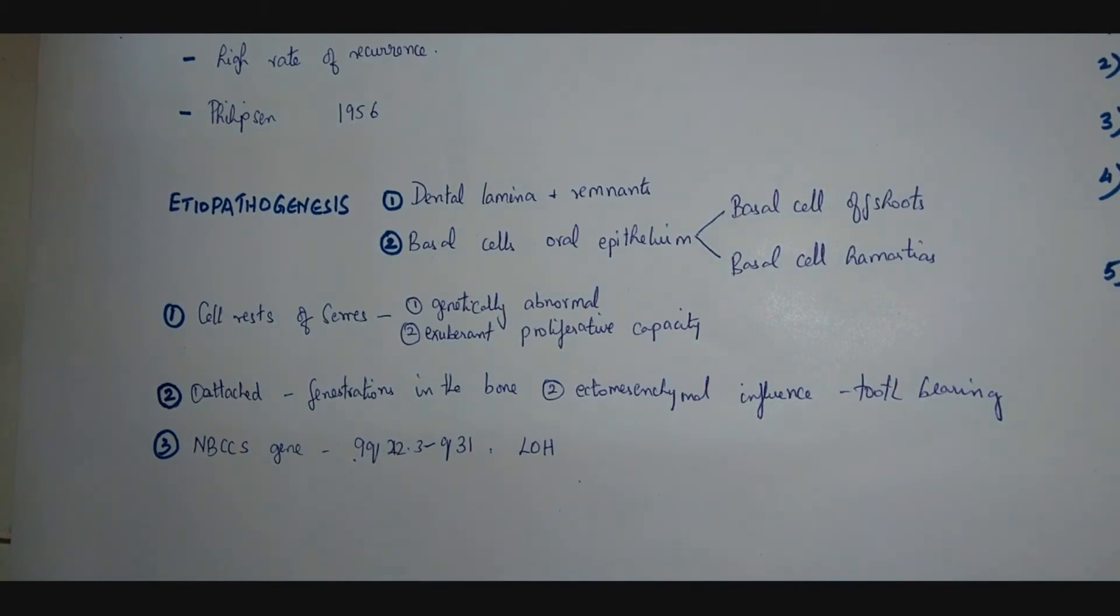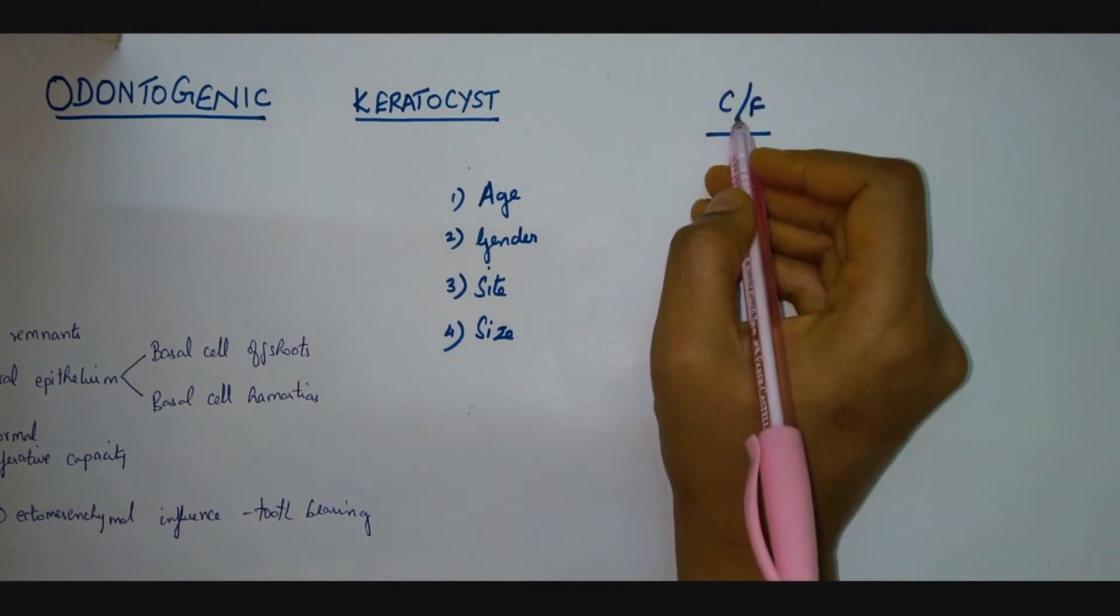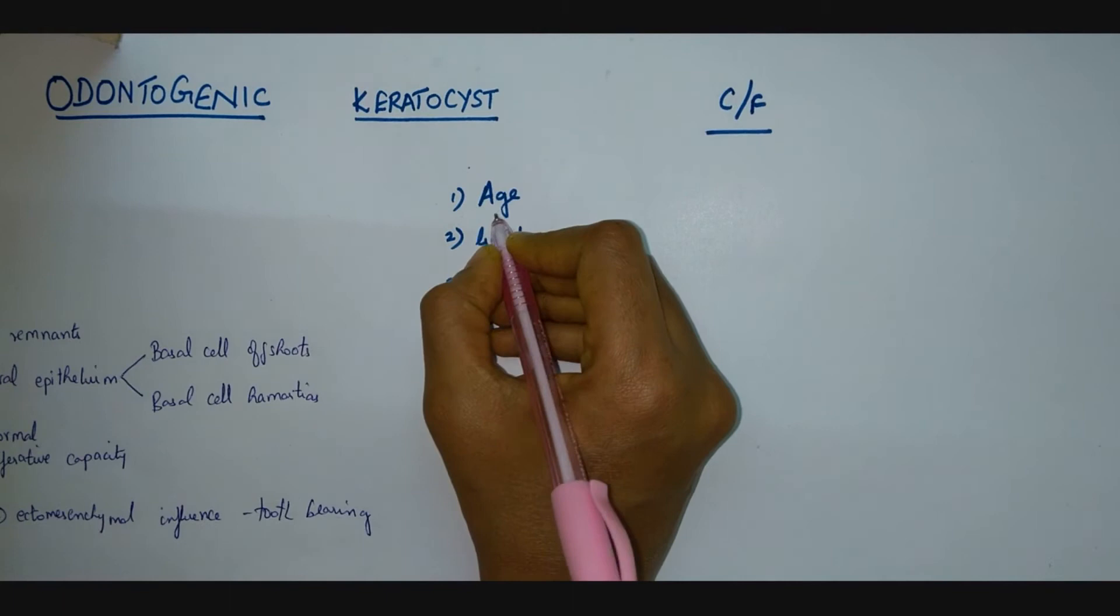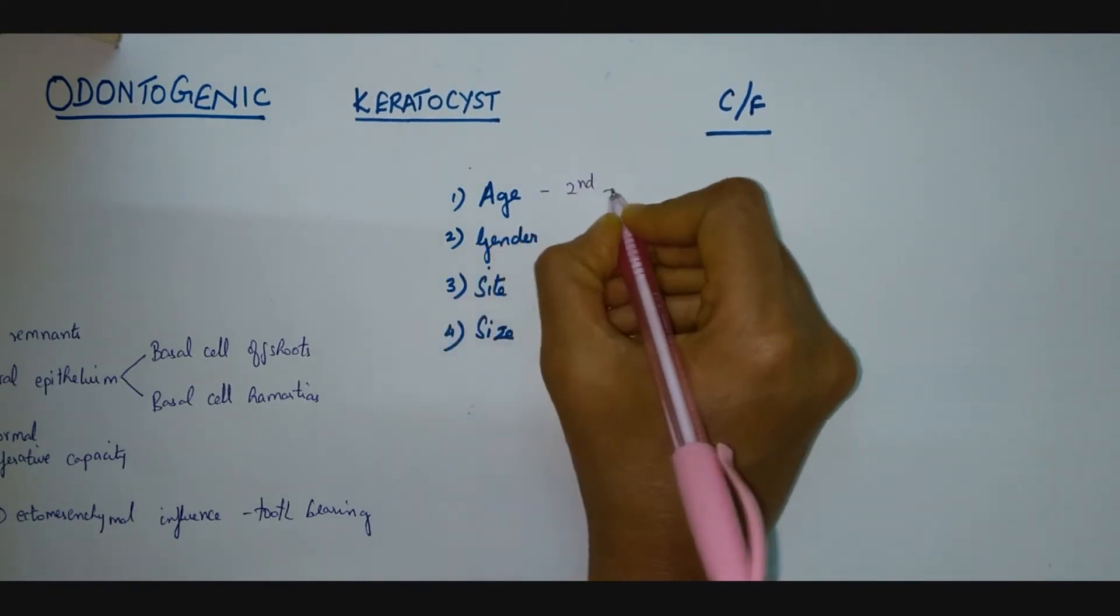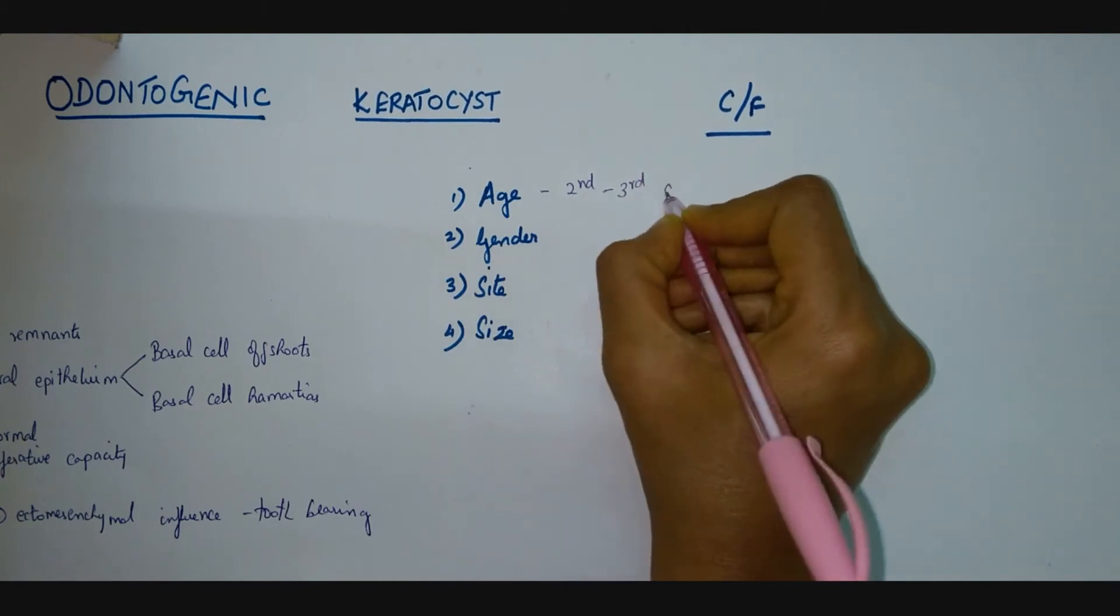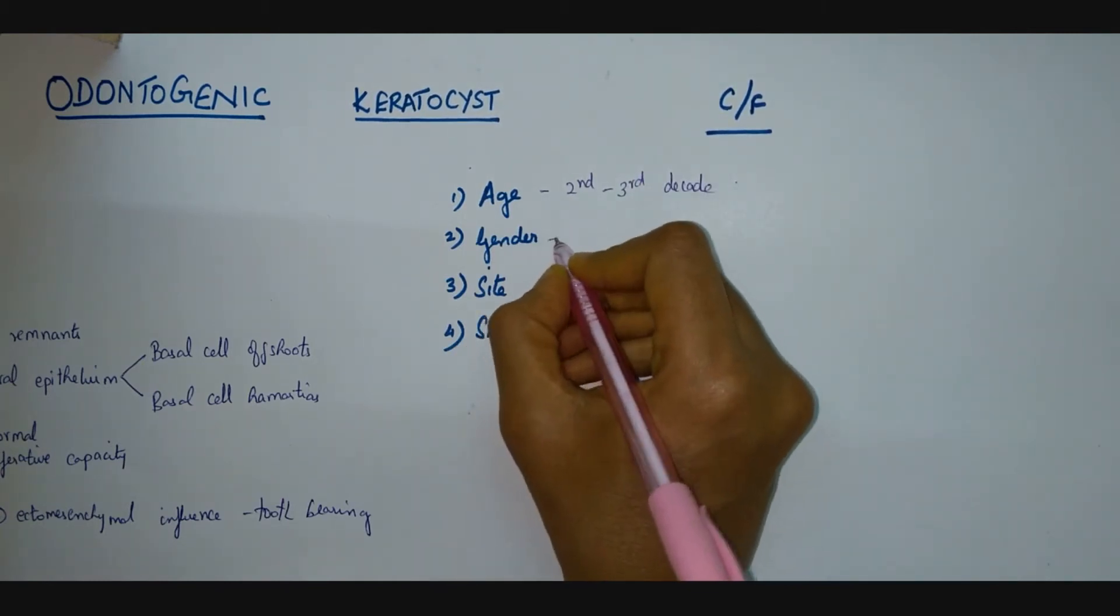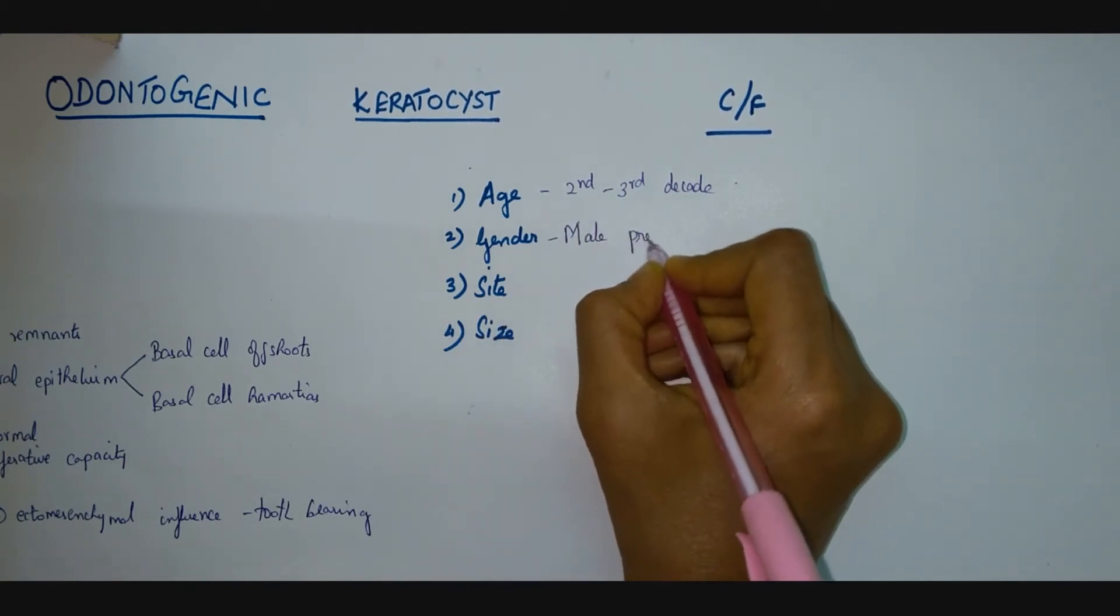Next we can see about the clinical features of the odontogenic keratocyst discussed under the following headings. The most common age of occurrence is the second to third decade of life, and majority of the people are male, that is the lesion has a male predilection.